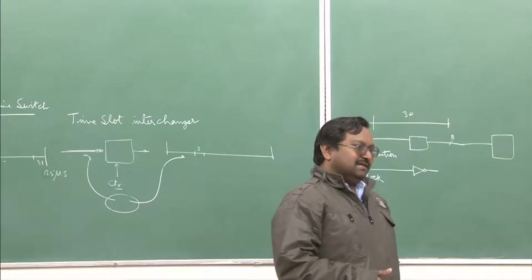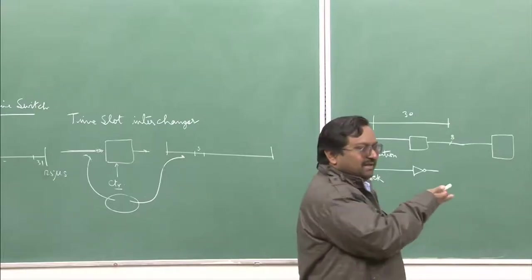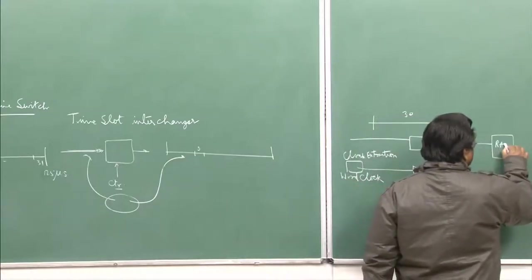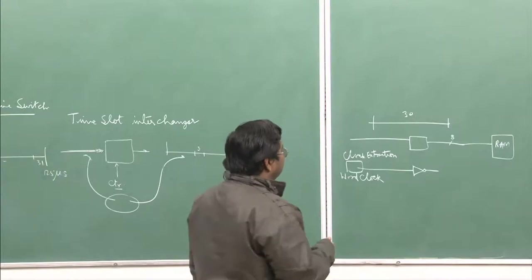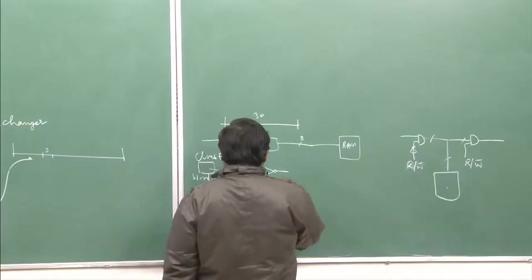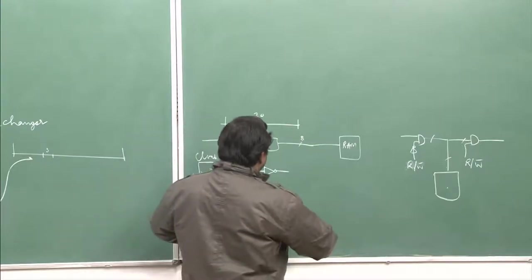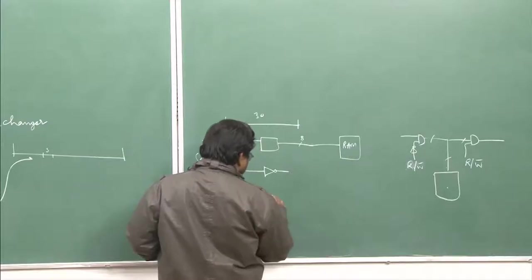Smaller sizes are pretty simple; even larger sizes can be done because crossbars are technically built using digital logic gates. Now, I have to tell the RAM at which location to write. I am assuming the first octet is written at the first location, second at second, third at third, and the 30th octet at the 30th location — written sequentially. To do this, I must run a counter clocked by the word clock.